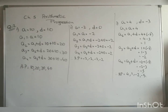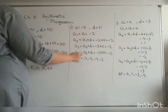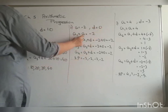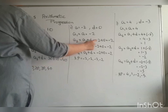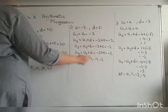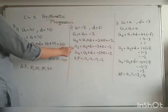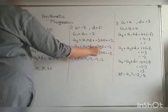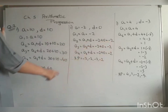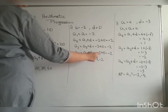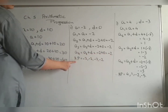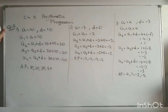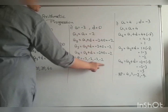Second part: first term A equals minus 2, difference D equals 0. A1 equals minus 2. A2 equals A1 plus D equals minus 2 plus 0 equals minus 2. A3 equals minus 2, A4 equals minus 2. All four terms are the same because the difference is 0.